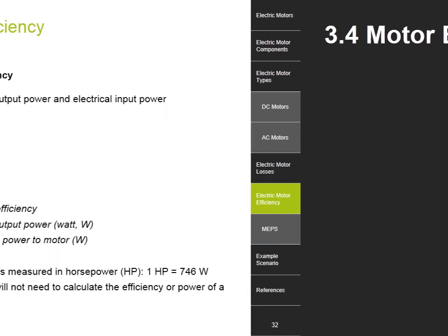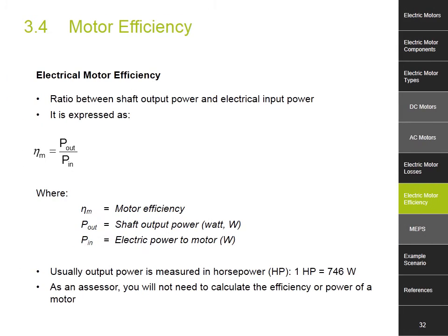Motor efficiency. Electrical motor efficiency is the ratio between the shaft output power and the electrical input power. It is denoted by the Greek letter eta subscript m. If power output is measured in watts, efficiency can be expressed as being equal to power out divided by power in, where eta_m is the motor efficiency, power out is the shaft power out in watts and power in is the electric power into the motor in watts. In reality, as an assessor you will rarely be required to calculate the efficiency of motors, as these values will be nominated by the manufacturer on the motor's nameplate or manual. Motors are engineered and selected for their precise applications. Their efficiency and power are calculated and predetermined specifically for the application; however, it is always valuable to know the theory behind it.